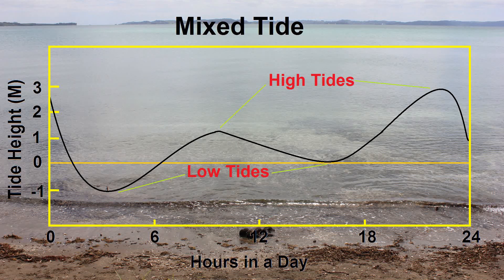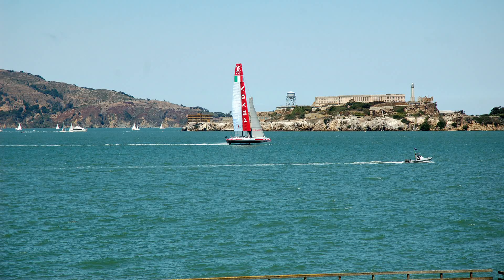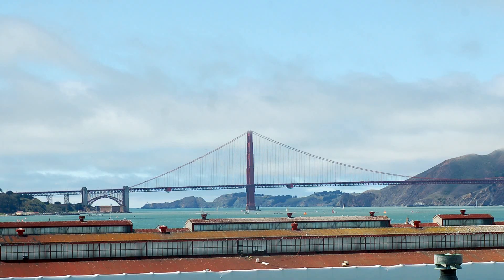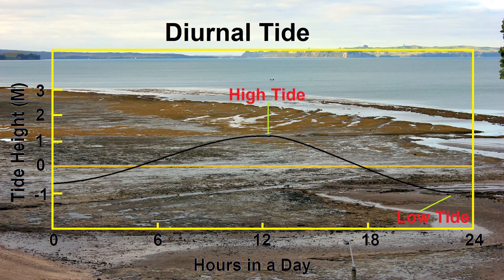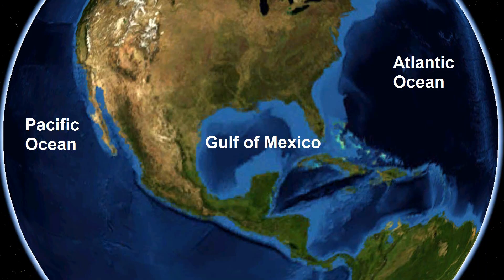Some coastlines experience two high tides and two low tides of different tidal range every day. This is called a mixed semi-diurnal tide — for example, San Francisco Bay. Other coastlines have only one high and low tide each day. This is called a diurnal tide. For example, many places in the Gulf of Mexico experience diurnal tides.